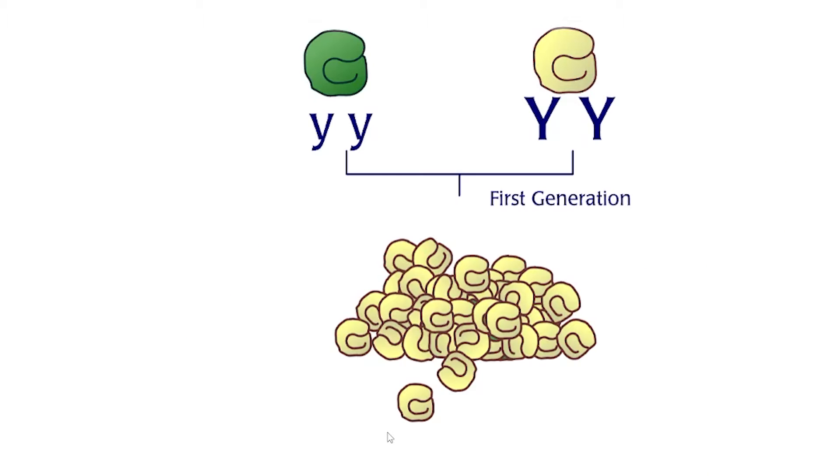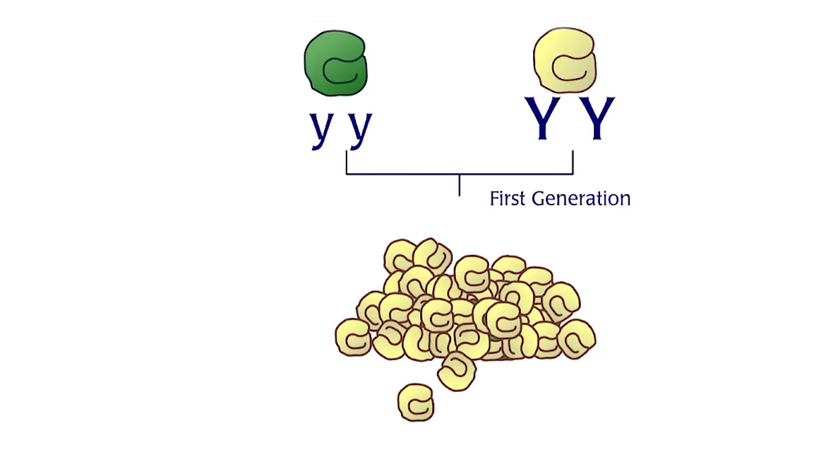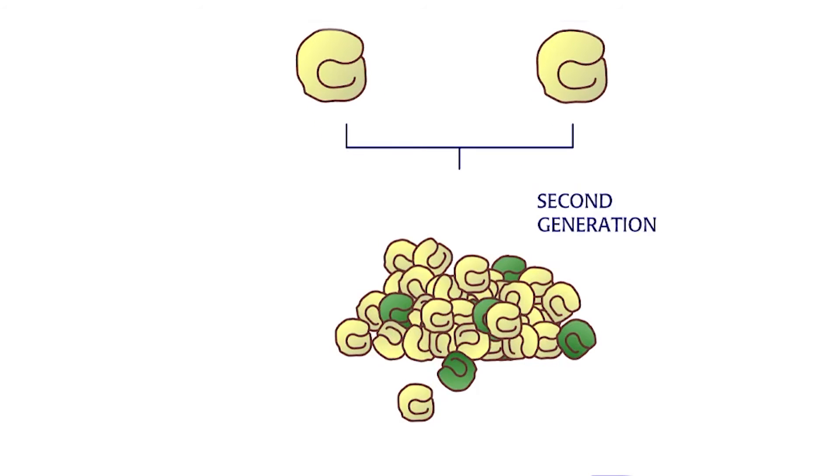Mendel proposed that a cross between two purebred parents with different traits like seed color would produce hybrid offspring with both gene alleles for green and yellow seed color. There is no blending of color because the allele for yellow is dominant over the allele for green. Crossing purebred green and yellow, as yellow is dominant, all offspring were yellow.